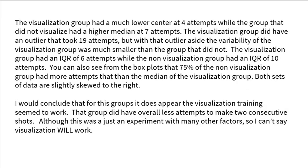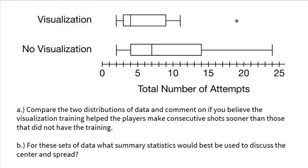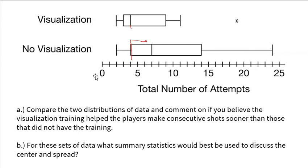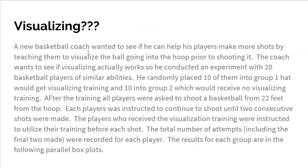You can also see from the box plots that 75% of the non-visualization group had more attempts than the median of the visualization group. Q1 for the non-visualization group — where 75% of kids were above — happened to be the same value as the median for the visualization group. So half of the visualization group was lower than 75% of the non-visualization group. I also noted that both distributions looked somewhat skewed to the right — both are elongated to the right-hand side, and the outlier also contributes to that skew.